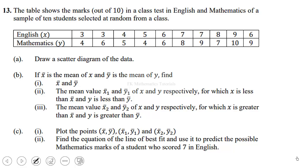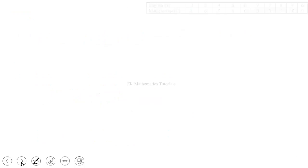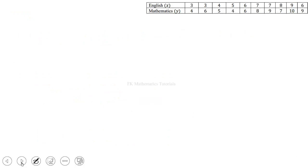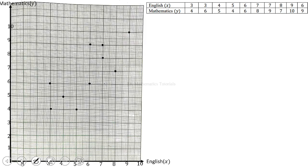Draw a scatter diagram of the data. If x bar is the mean of x and y bar is the mean of y, find x bar and y bar. So let's start from here. We will get a graph sheet and plot this point. So let's get a graph sheet and draw the axis for x and y. We'll plot the points.